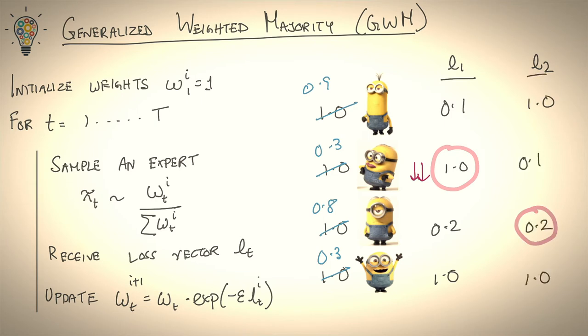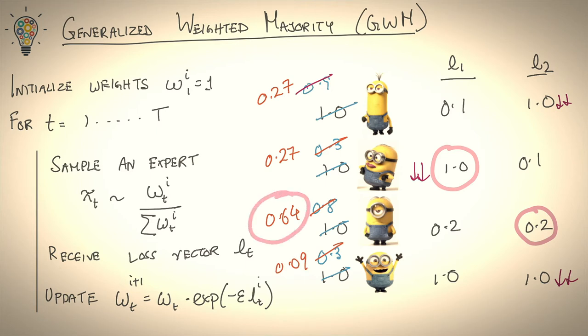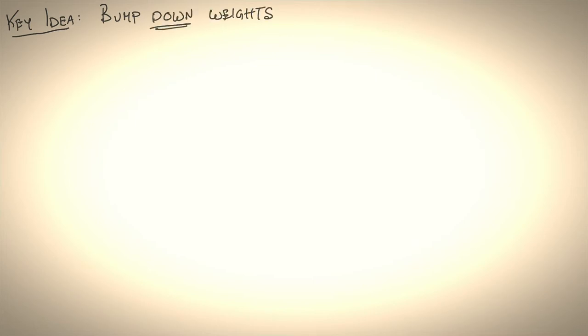Next time, if you observe another loss vector, you bump down experts 1 and 4 because they incurred a high loss. You can imagine how this algorithm evolves over time. As you play more and more rounds, the weights around the best expert remain large while the other weights keep falling to zero. The key idea of GWM is to bump down the weight of experts proportional to the loss that they incur.